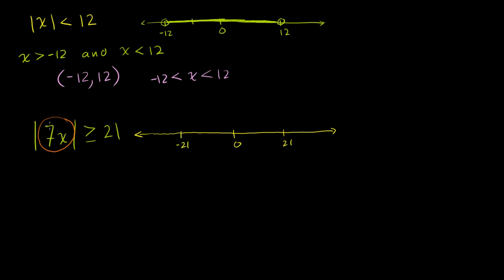We want all of the numbers that are greater than or equal to 21 away from 0 — their absolute value is more than 21. All of these negative numbers that are less than negative 21, when you take their absolute value, when you find their distance from 0, they're all going to be greater than 21. If you take the absolute value of negative 30, it's going to be greater than 21. Likewise, anything greater than positive 21 will also have an absolute value greater than 21.